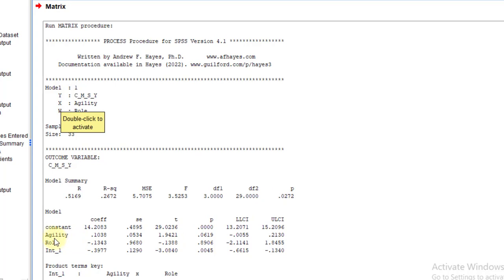Further, if we go, the agility is found to be insignificant because the p-value is greater than 0.05. Similarly, role also insignificant. However, the interaction effect of agility and the role, it means the moderating, there is a significant effect of the moderate in the relationship between agility and CMSY.